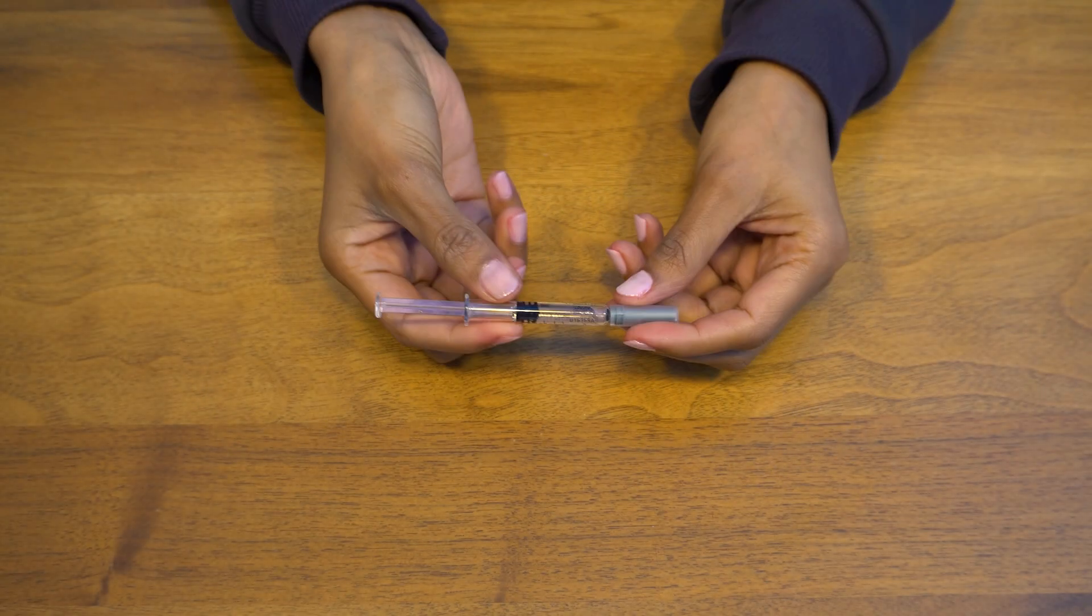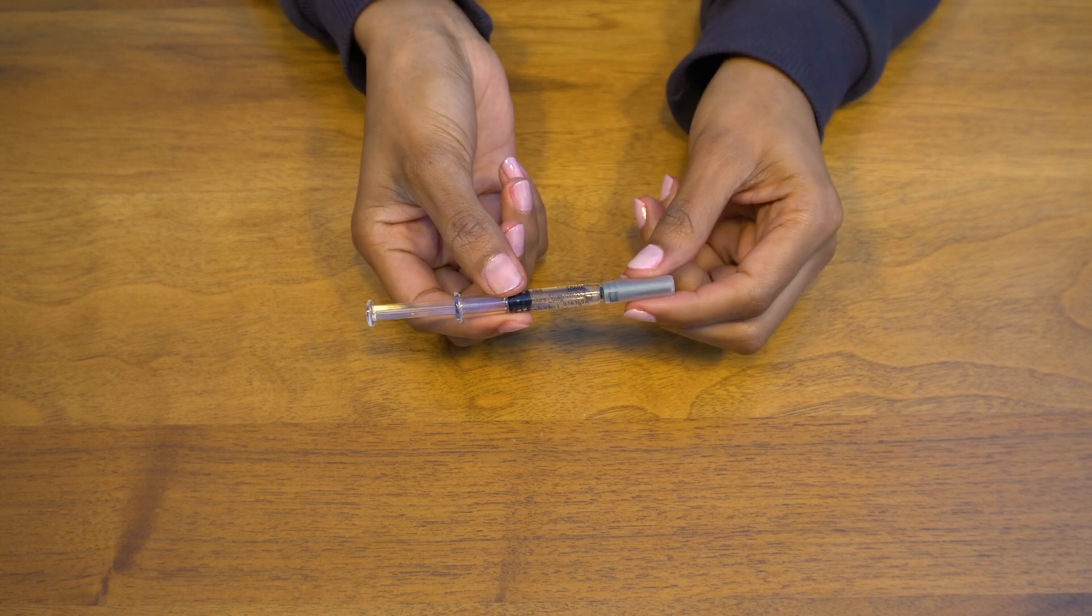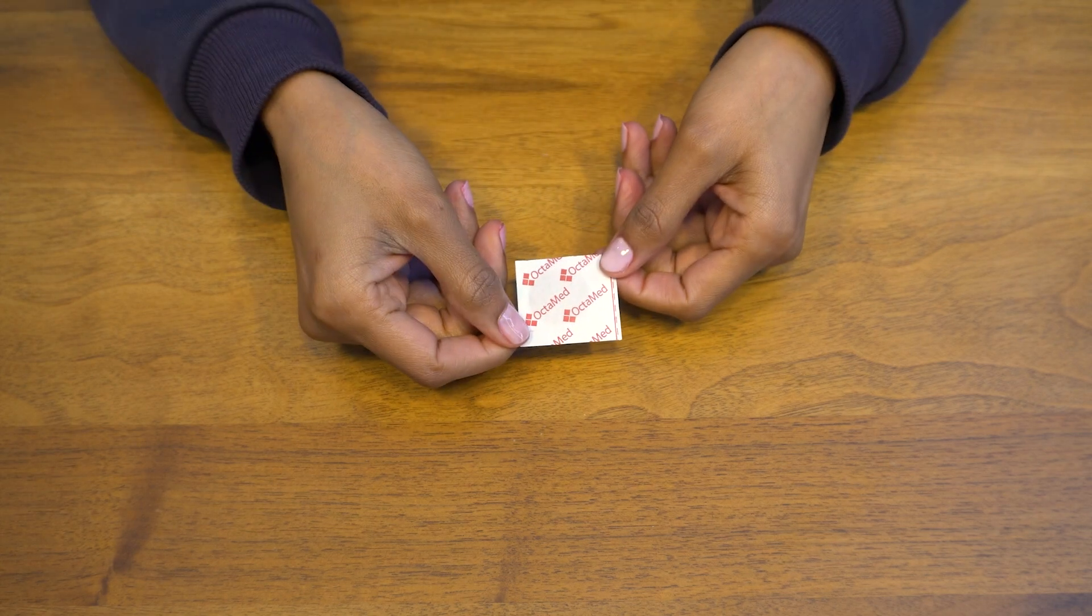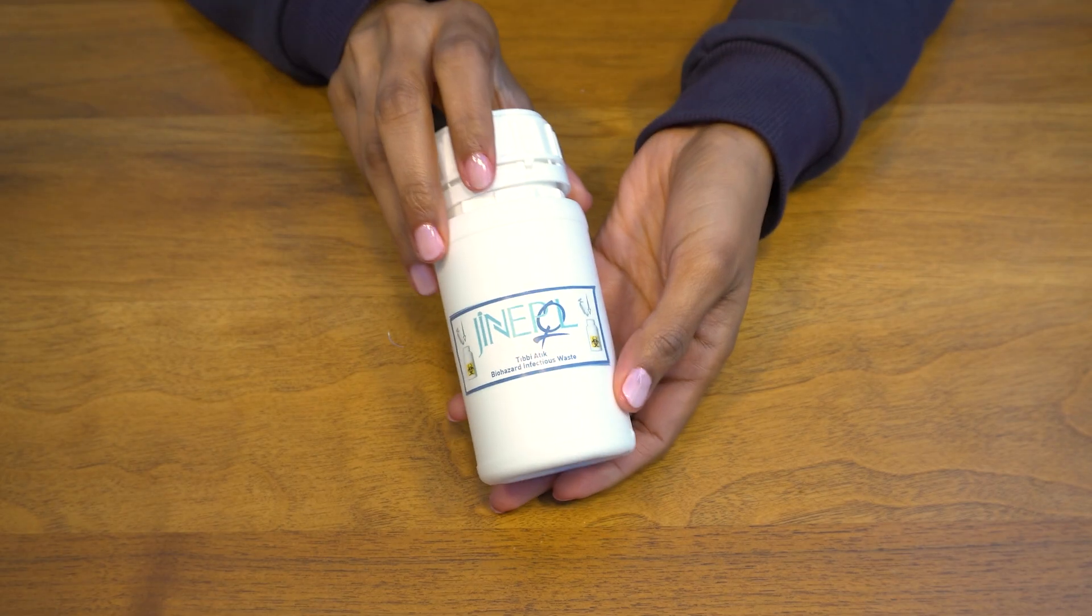Preparation. You'll need Gonapeptal pre-filled syringe, alcohol swab, Band-Aid, and sharp disposal container.